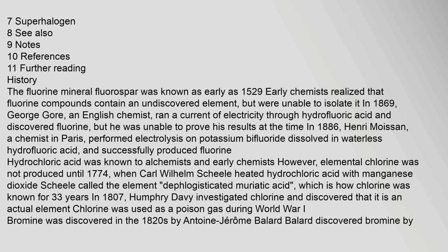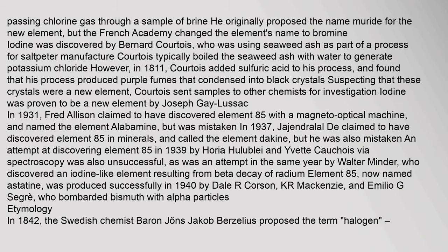In 1807, Humphrey Davy investigated chlorine and discovered that it is an actual element. Chlorine was used as a poison gas during World War I. Bromine was discovered in the 1820s by Antoine-Jérôme Balard. Balard discovered bromine by passing chlorine gas through a sample of brine. He originally proposed the name maride for the new element, but the French Academy changed the element's name to bromine. Iodine was discovered by Bernard Courtois, who was using seaweed ash as part of a process for saltpetre manufacture.